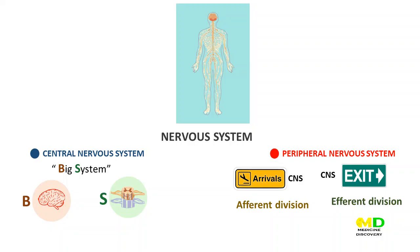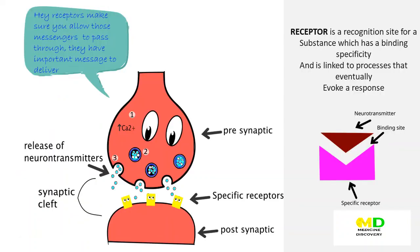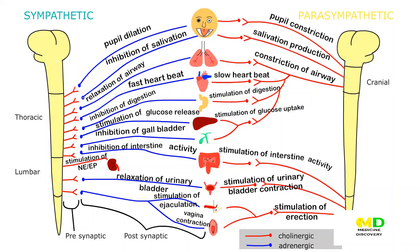In the previous video we talked about how the nervous system works and how to understand and memorize sympathetic and parasympathetic effects taking place in our bodies. Today we are going to talk about autonomic nervous system drugs in a simplified way. Be with me until the end of the video to know more about these drugs and memorize them at one time. Let's start.